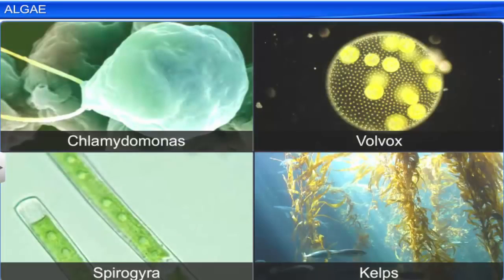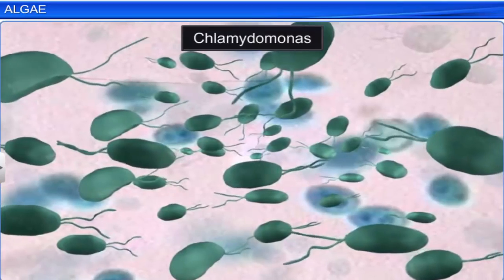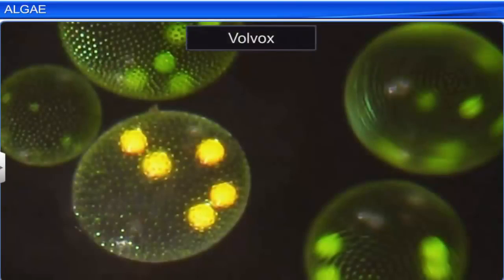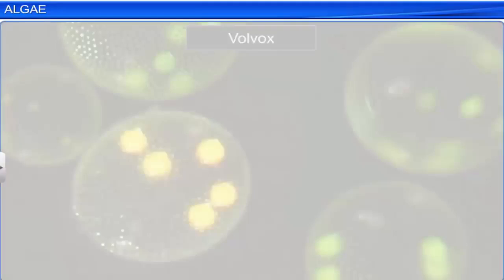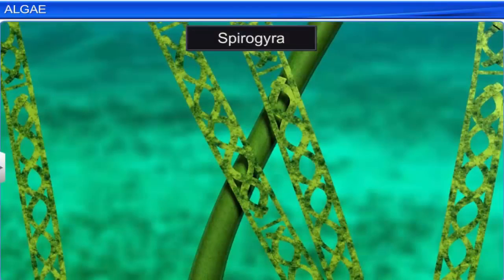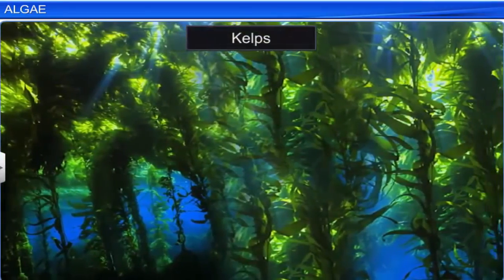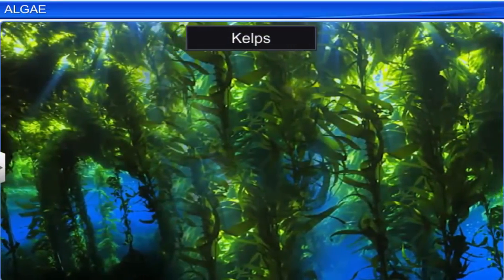Algae come in different forms and sizes. For instance, Chlamydomonas is unicellular, whereas Volvox is of colonial form, and Spirogyra is filamentous. On the other hand, kelps form massive plant bodies.